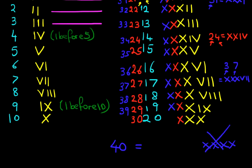40 is written as, I'm just going to write it in yellow, is XL. XL is 40. That means 10 before 50.